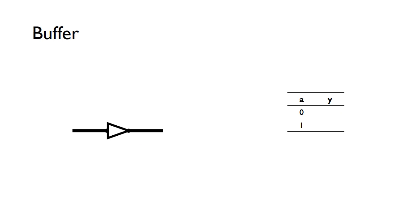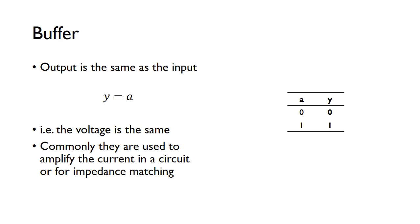A buffer is a bit like a NOT gate, except a NOT gate is an inverter whereas a buffer doesn't change the input at all. A zero on the input gives a zero on the output, and a one on the input gives a one on the output. You might think that's not very useful since the output is the same as the input, but buffers are commonly used to amplify the current in a circuit.